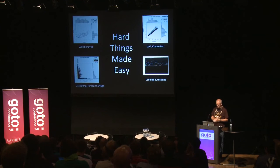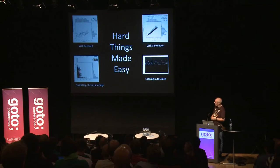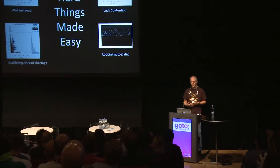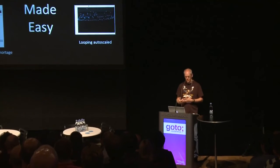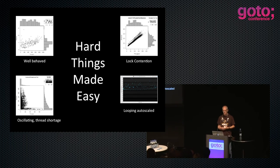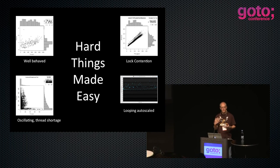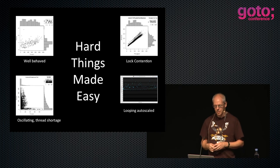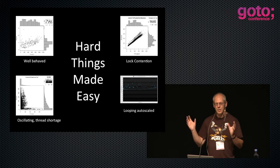So this is basically my summary plot. These are the four hard things to figure out: whether you have lock contention, whether you have a well-behaved system, whether you're oscillating and have thread shortages, or whether you have some sort of looping auto-scaled system. If all you have to do is draw a graph, look at it, and decide what shape it is — you can see what's going on. And we can finish with some liquid aloha.